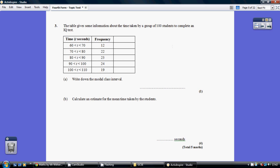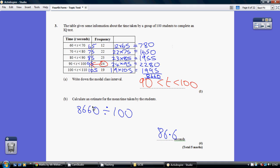Now, question 3 is very similar. So, part B comprises the bits in blue. So, midpoint, cross-multiplying, adding that up to get 8,660. And then dividing that by the 100 students. That gives us 86.6 seconds.